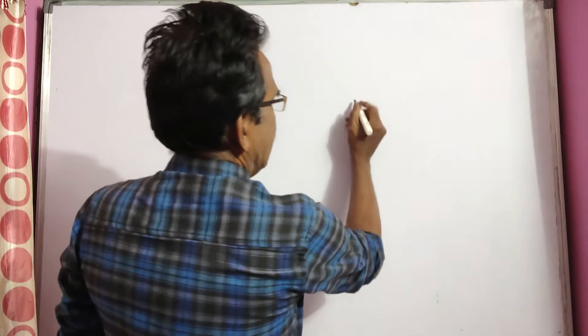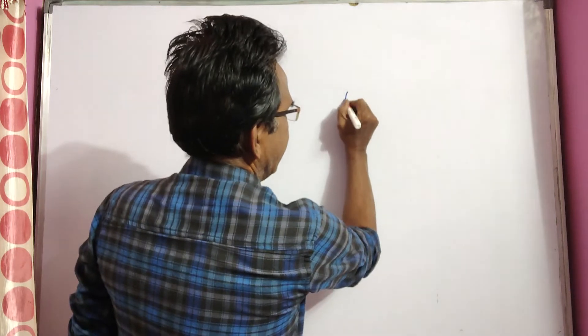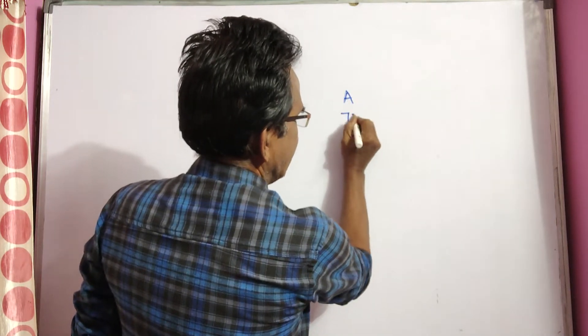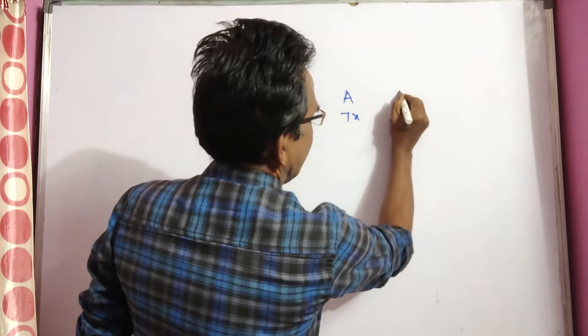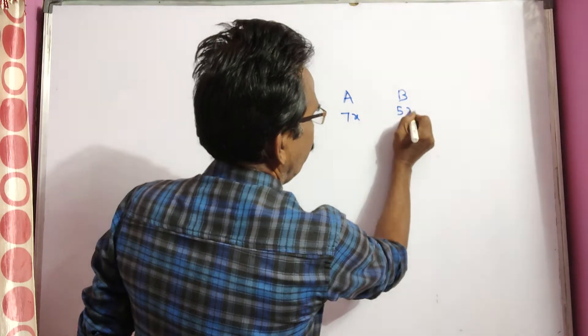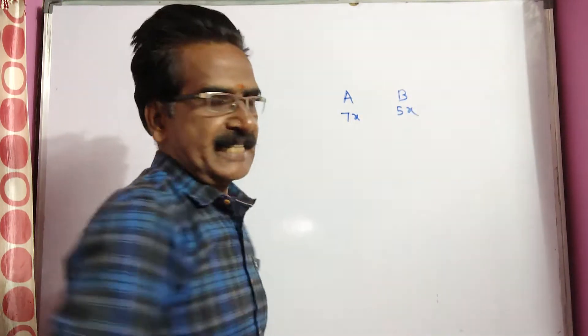A can contains a mixture of two liquids A and B in the ratio 7 is to 5. That means liquid A is 7x liters and liquid B is 5x liters.